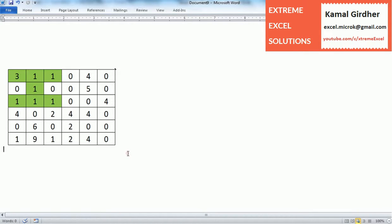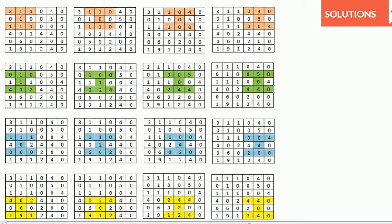Looking at all possible combinations: the first three rows give four combinations, skipping the first row and using rows two, three, and four also gives four combinations, rows three to five give four more, and rows four to six give another four. So in total there are 16 combinations possible in a six by six matrix.